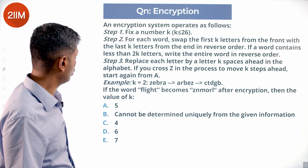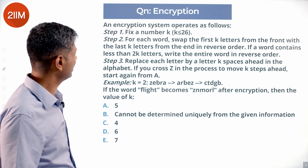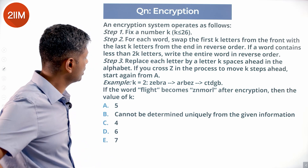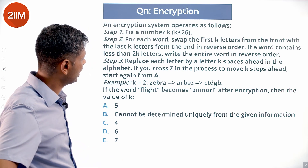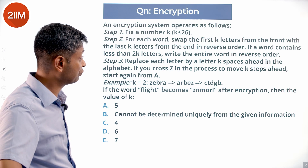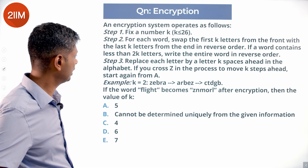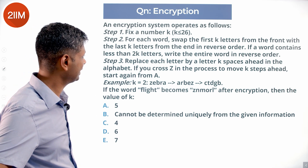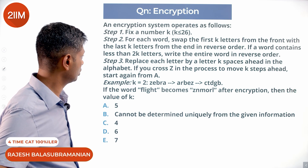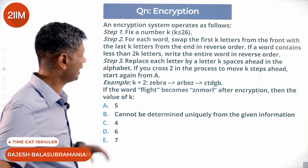An encryption system operates as follows: fix a number k, where k ≤ 26. For each word, swap the first k letters from the front with the last k letters from the end, in reverse order. If the word contains less than 2k letters, write the entire word in reverse order.